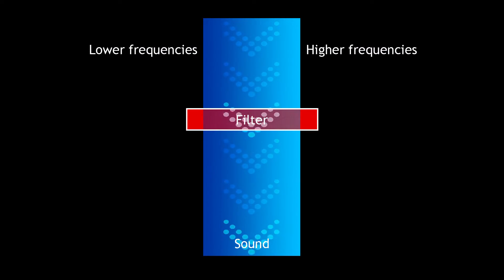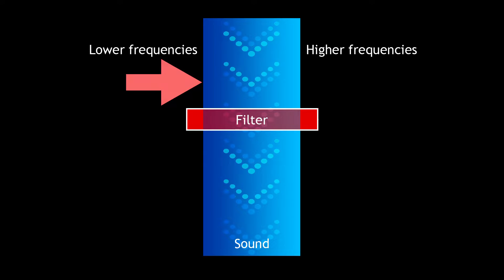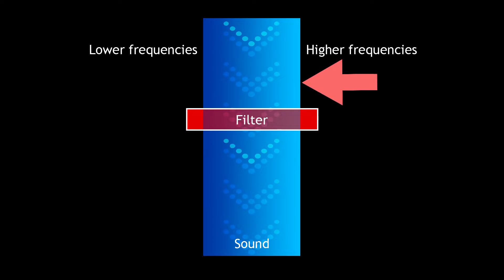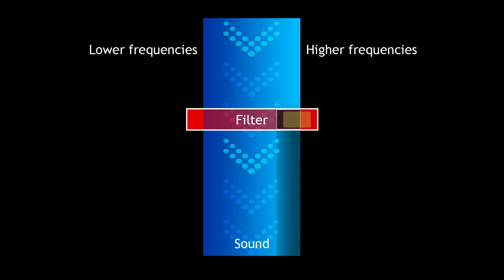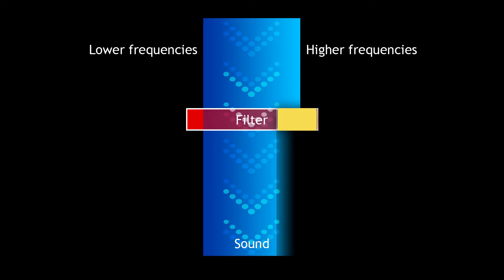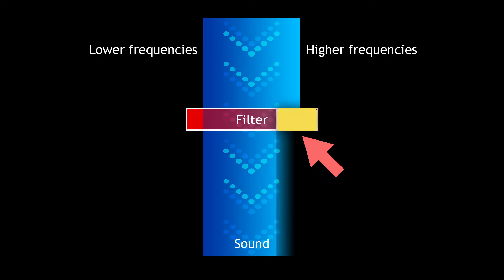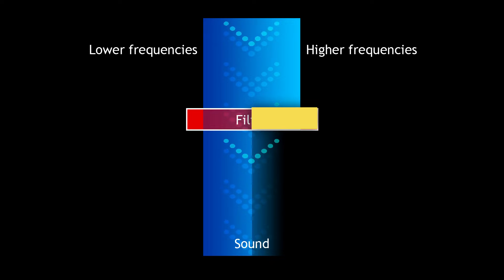This diagram shows the sound passing through the filter. The left side of the sound has lower frequencies and the right side has higher ones. This filter does not remove anything since it is fully open. When we add a blocker, the higher frequencies are removed. We can modify the point where frequency removal happens — this point is called the cutoff point.